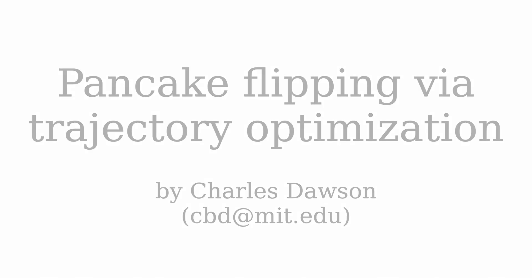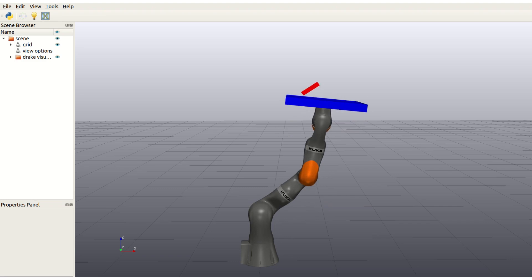In this project, we use non-convex optimization with implicit contact dynamics to find dynamically feasible pancake flipping trajectories. We model the pan and pancake using floating base coordinates and constrain the trajectory to obey the system dynamics.